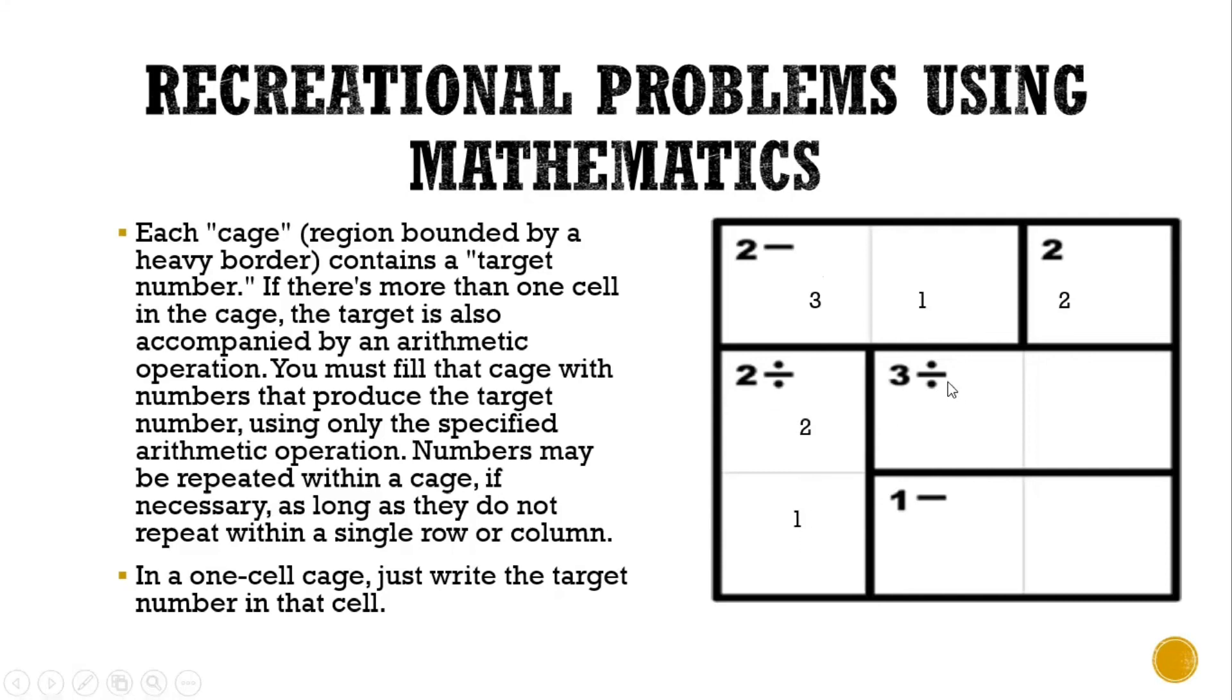Here, what are the 2 numbers from 1 to 3 that when we divide will equal 3? Since in this row 2 is already used, we can write here 3 and 1. When we divide 3 and 1, it equals the target number, which is 3. For the last cage, what are the 2 numbers that when we subtract will be equal to 1? Those are 2 and 3.